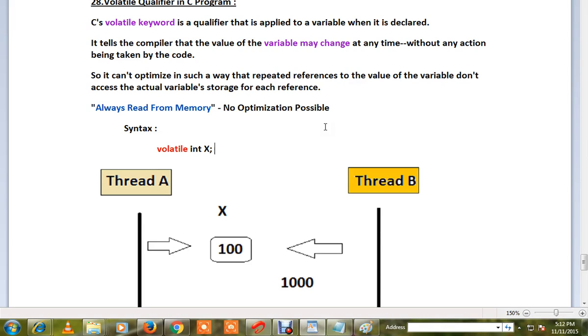So I need to take necessary action. It can't optimize in such a way that repeated references to the value of the variable don't access the actual variable storage for each reference. Always read from memory.